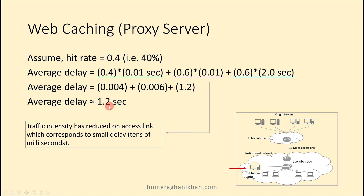Earlier, when all traffic went to the web server through the internet, the internet delay alone was 2 seconds. Now, with a web cache installed, the average delay is approximately 1.2 seconds — that is the improvement achieved.